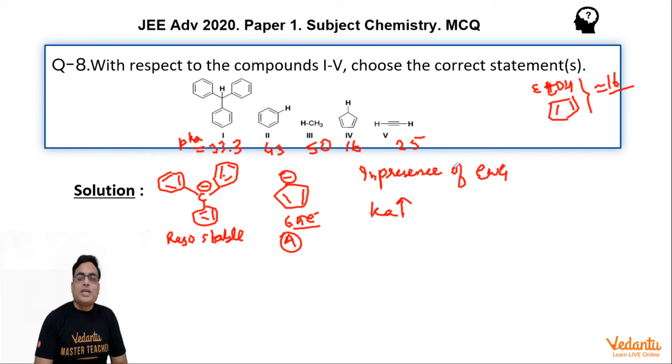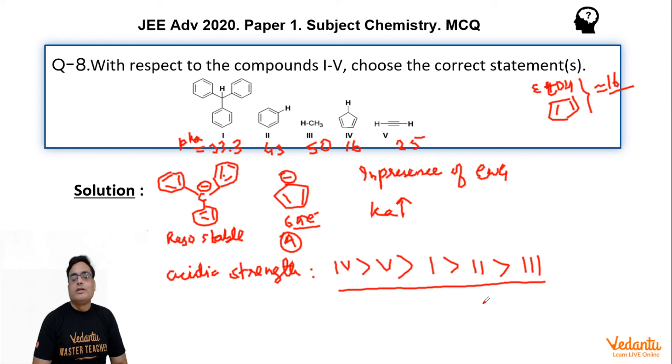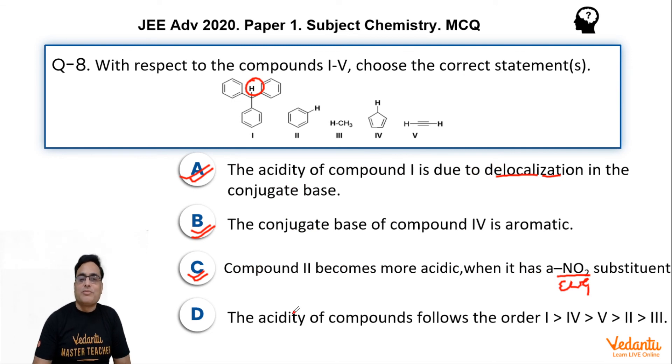So according to this pKa value data, if you want to make the order of acidic strength, then actual correct order of acidic strength should be 4 most acidic, then 5 which is second most acidic, then 1, then 2, and at last 3. So this should be the actual acidic strength order. That means our statement D is not the correct statement.